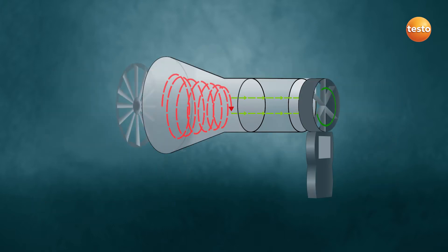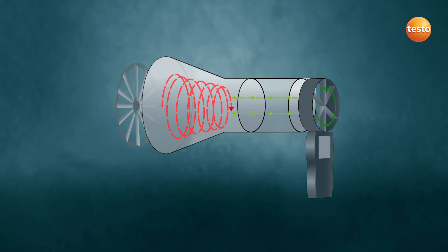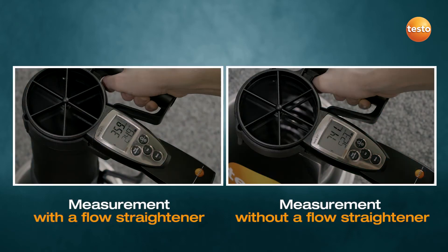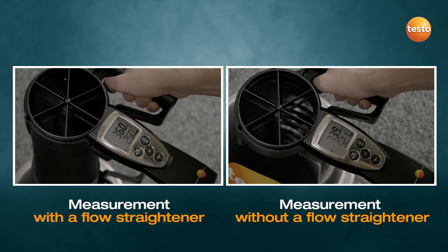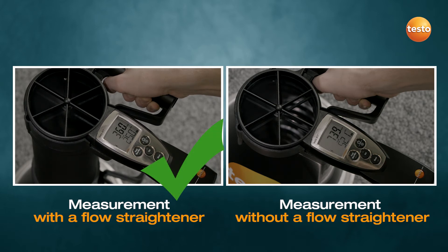What does the flow straightener do? With the patented TestoVent 417 flow straightener, any rotational movement of the air is first calmed and changed to a straight flow direction. This directed airflow is then reliably recorded with the vane, so that the most accurate measurement results are achieved quickly and easily.